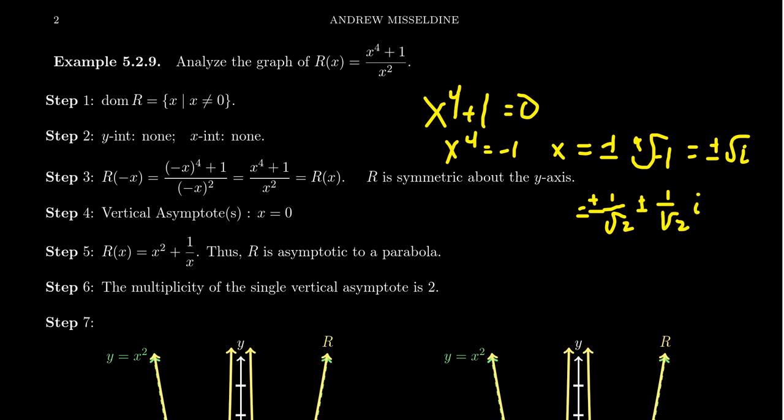But the thing is, these are not real numbers. These are non-real numbers, complex numbers, yes. But when we're graphing, it needs to be a real number. And so as such, we don't have any x-intercepts.